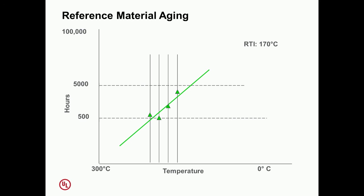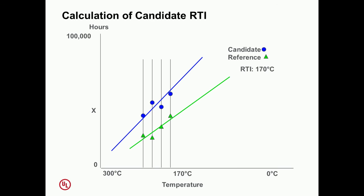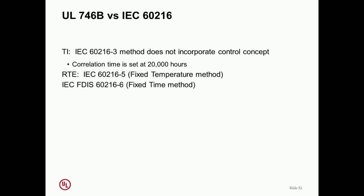Our aging is plotted ultimately into a graph very similar to this, where we're showing the relative temperatures in the number of hours. This particular one is a reference for 170 degrees C relative thermal index. Then for the candidate reference, we'll be looking at comparing it to the known materials in order to come up with a correlation. That's how we end up with that 170 C degree temperature.